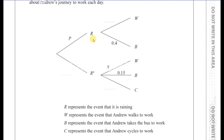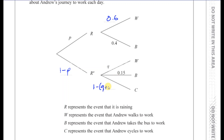There are certain things that are missing which we can fill in exactly. For example, this is 0.6 because the branches have to add up to 1. And if this is P, this must be 1 minus P. This is Q, this is 0.15, so this must be 1 minus Q plus 0.15, because they have to add up to 1.